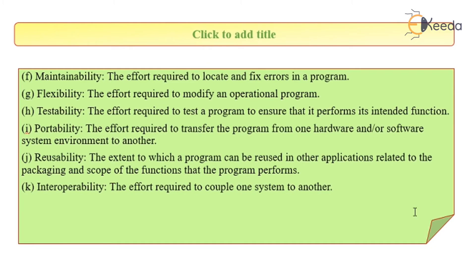Reusability: the extent to which a program can be reused in other applications related to the packaging and scope of the function that the program performs. A program must be designed in such a way that it is forward and backward compatible. Forward compatible means the next versions of the software can work in collaboration with the previous version — for example, Windows 22 should work well with previously installed Windows 10. Interoperability: the effort required to couple one system with another. For example, if I want to transfer an image to a friend, regardless of what mobile she is using, then it is said to be interoperable.